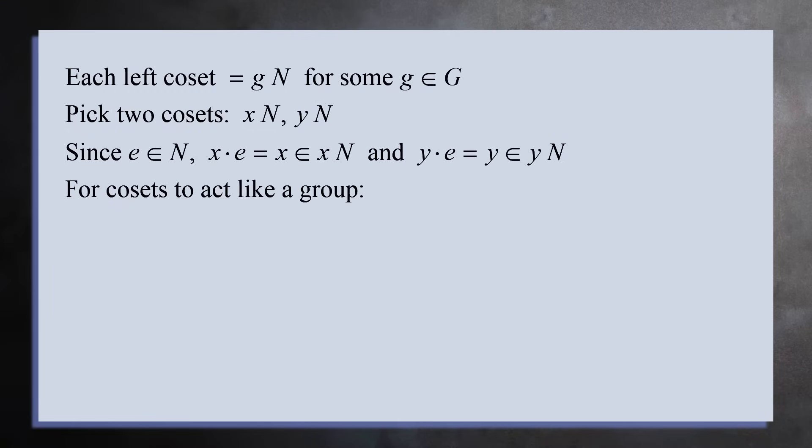So if the cosets behave like a group, x times y must be in the product of the two cosets. In other words, xN times yN should equal xyN. If this is true, then the product of any element in the first coset with any element in the second coset should be in the coset xyN. Let's see when this happens.